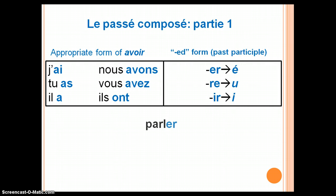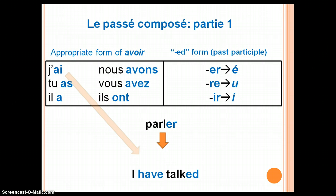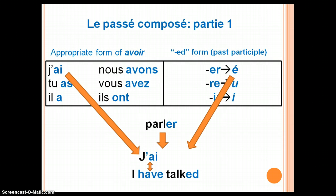As an example, let's use parler. Imagine you want to say, 'I have talked.' Your first step is to use the appropriate form of avoir — in this case, j'ai — and the past participle of your verb. Parler is an er verb, so er changes to é accent aigu. Now you have j'ai parlé — I've talked, or I did talk, or I talked.